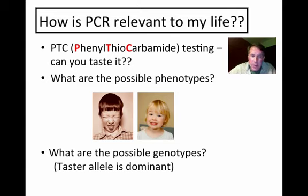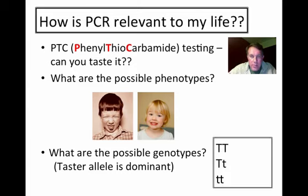If those are the two phenotypes, how many possible genotypes are there? The taster allele is dominant. From Mendelian genetics, there are really three options. You could be big T, big T — homozygous dominant — a taster. You could be heterozygous, big T, little t — still a taster phenotypically, but with one dominant and one recessive allele. Or you could be homozygous recessive, little t, little t — which is the non-taster.